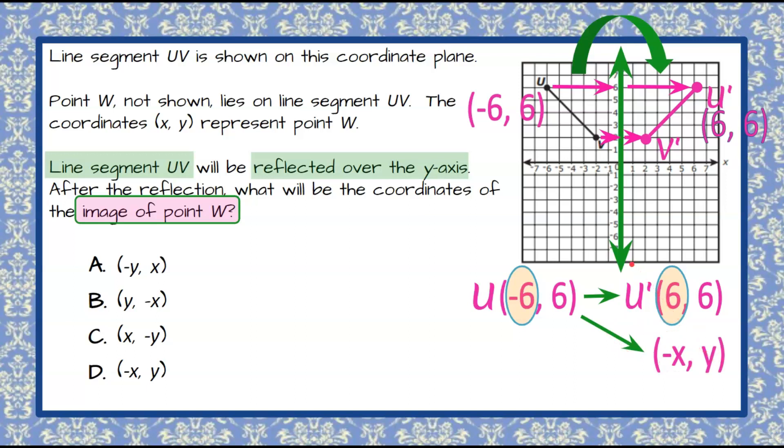Now before we go pick our answer solution, let's check V. V is (-2, 2), and V prime is (2, 2). So when we look at our x coordinates, negative two, and that's the opposite, the y's are the same. So our rule works.